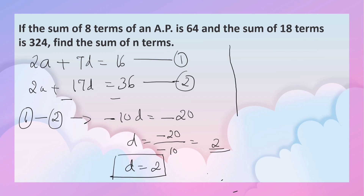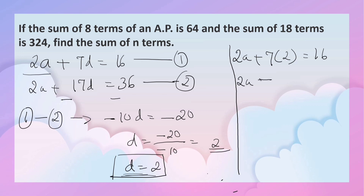Now we can find the value of A by substituting D = 2 in equation 1. 2A plus 7 into 2 equals 16, so 2A plus 14 equals 16. Therefore 2A equals 16 minus 14, that is 2, so A equals 1. We now have D = 2 and A = 1.